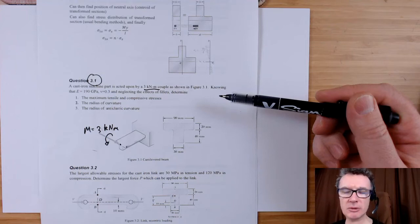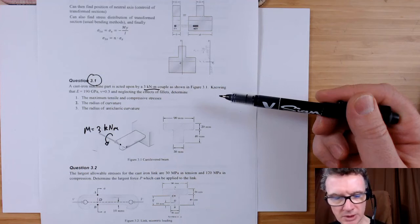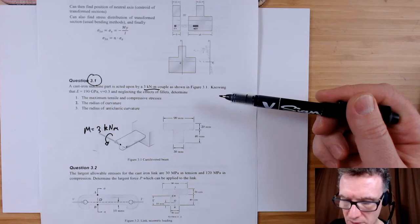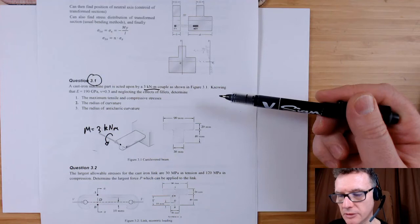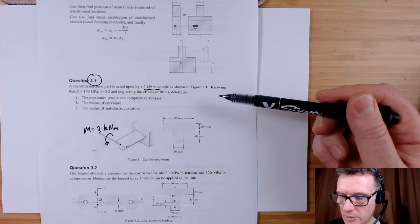So we found the y-bar. Why we find the y-bar? So we can find I. The y-bar, so the sum of the d to the power of 3 sections divided by 12 plus AH squared.